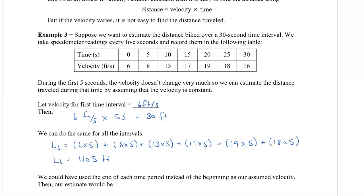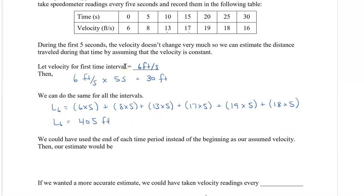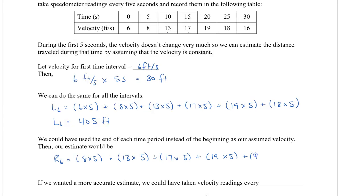We could also use the velocity at the end of each time period instead of the beginning, giving us the right endpoint approximation. So from zero to five seconds we assume 8 feet per second, then 13×5 for the next interval, then 17×5, 19×5, 18×5, and finally 16×5. Using the right endpoint gives us 455 feet, since we're starting and ending at higher velocities in some intervals.